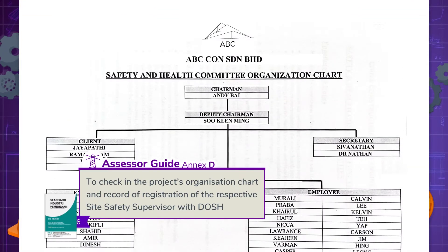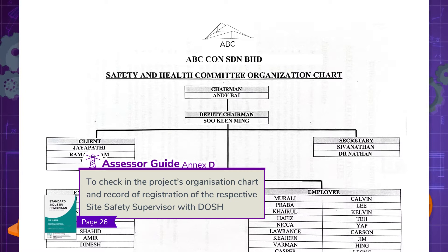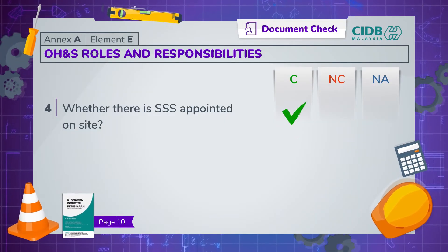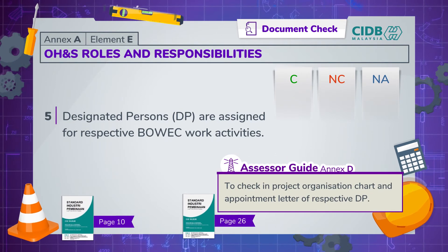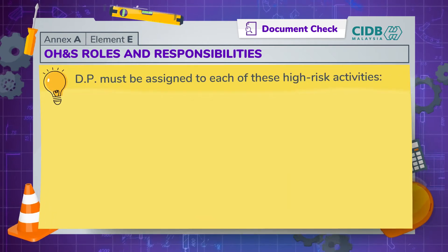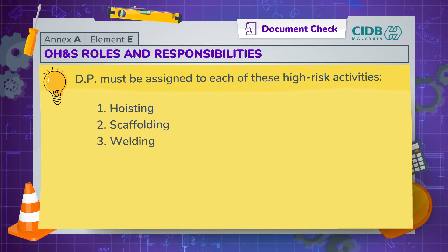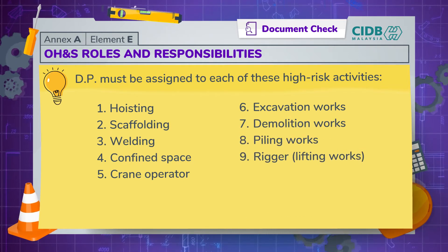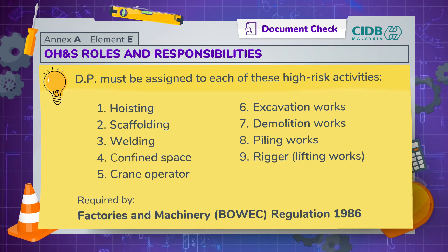From the organisation chart, check if a site safety supervisor or SSS has been appointed and, if so, check for the record of the SSS registration with DOSH. A designated person shall be assigned to each high-risk work activity at the construction site. The nine high-risk activities include hoisting, scaffolding, welding, confined space, crane operator, excavation works, demolition works, piling works, and rigger or lifting works. This is a legal requirement stated in the Factories and Machinery BOAC Regulation 1986.